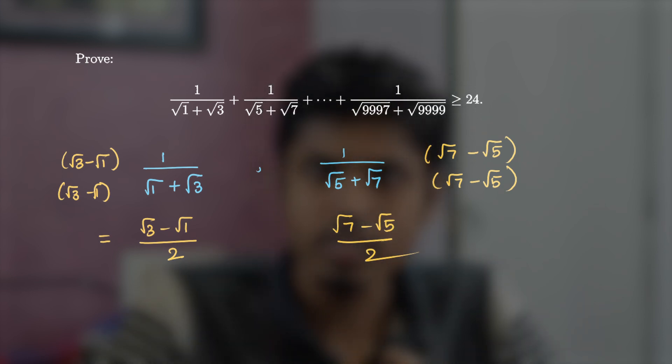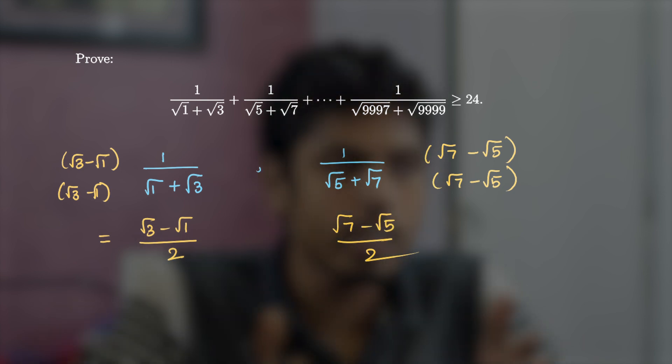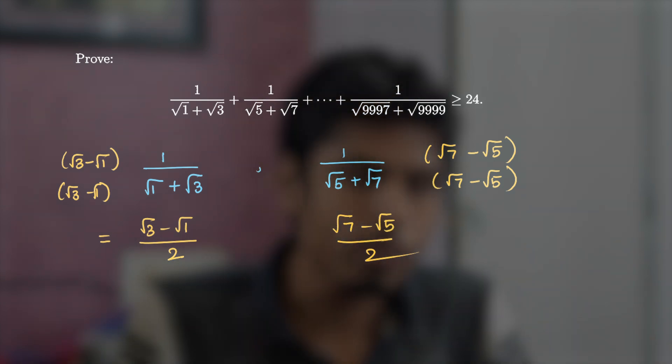We know in telescoping series, terms get cancelled from the subsequent terms, but there are no common terms in the first. So we have to somehow eradicate this issue. And that's where inequality jumps into the picture. This idea plays the crucial role in this problem.